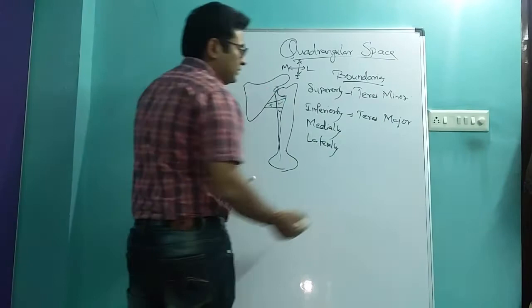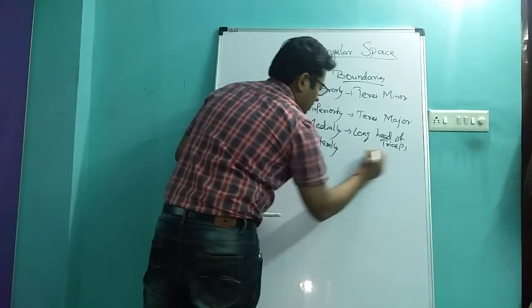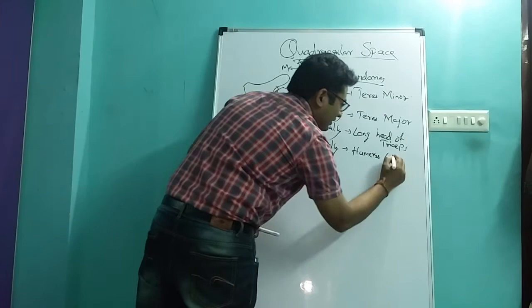Then what is present medially is long head of triceps, and laterally it is humerus. Which part of the humerus? It is surgical neck of the humerus.